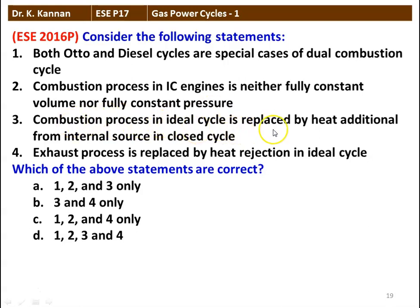Third statement: combustion process in the ideal cycle is replaced by heat addition from an internal source in a closed cycle — this statement is wrong. The heat is added from the external source. Fourth point: exhaust process is replaced by heat rejection process in the ideal cycle — this statement is also true. So the correct statements are one, two, and four. The third statement is wrong.